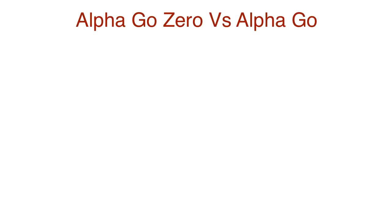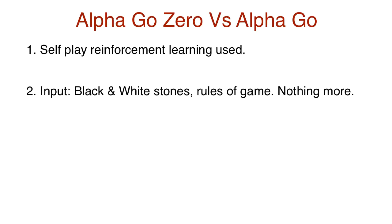Now AlphaGo Zero takes a different approach. There are four key differences between AlphaGo Zero and its predecessor. The first is self-play reinforcement learning is used, so there's no supervised learning using human data. The second is that the only input features are the black and white stones that are used in the game.